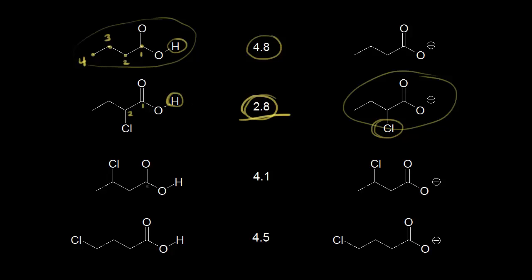If we move the chlorine to the third position — 3-chlorobutanoic acid — the pKa value is still lower than 4.8, now at 4.1. But notice it's not as low as with the chlorine on carbon two, where the pKa was 2.8. When the chlorine is on carbon three, the pKa is 4.1 — still more acidic than the original butanoic acid, but the electronegative atom is further from the negative charge, decreasing the effect.